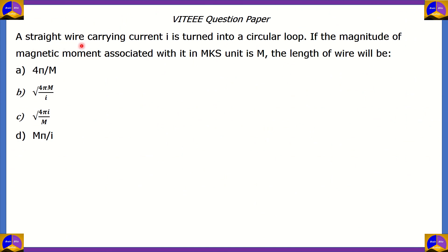A straight wire carrying current I is turned into a circular loop. If the magnitude of magnetic moment associated with it in MKS units is M, the length of wire will be: 4π divided by M; under root of 4πM divided by I; under root of 4πI divided by M; or Mπ divided by I.